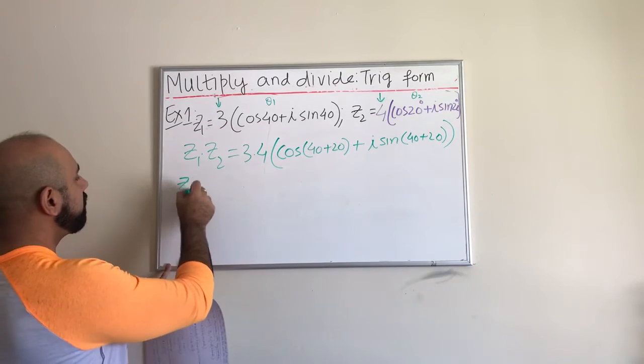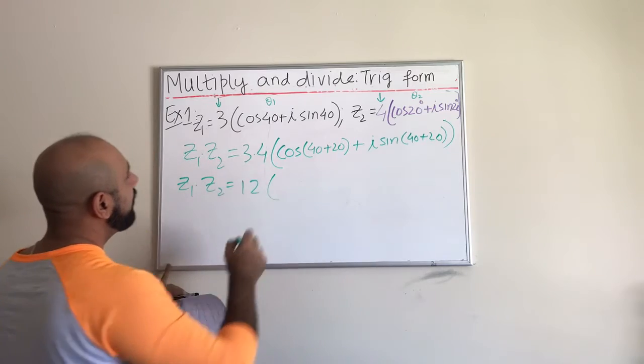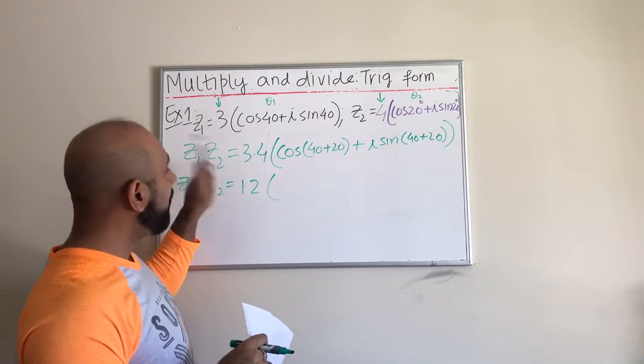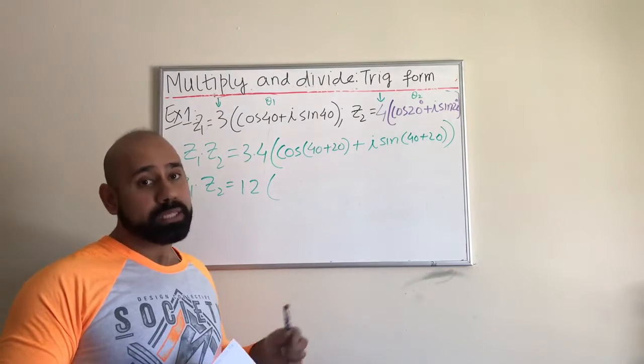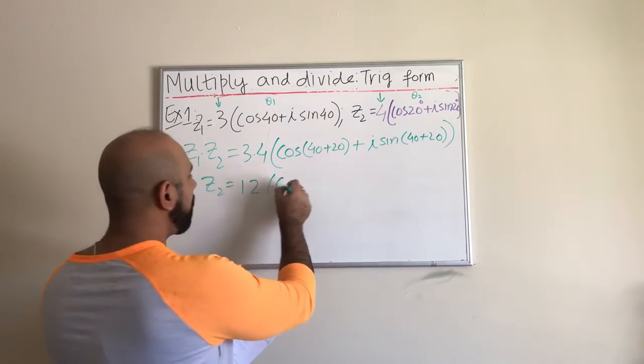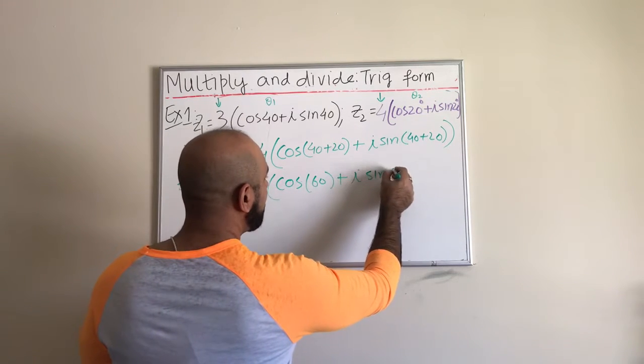Moving forward, simplifying this: 3 times 4 is 12. I forgot to mention that our goal is to multiply this and then we want to write it in the standard form which is a plus ib form.